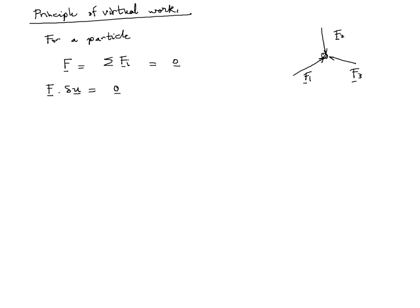On the other hand, if we start from the statement that F dot delta U equals zero for arbitrary delta U — and it is very important that the word arbitrary is used — then, since delta U is arbitrary, we can always choose delta U to be proportional to a vector with components one, zero, zero.